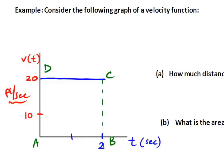All right, so let's suppose we have a graph of a velocity function here. So again, it looks like the velocity here is just constant. It's a constant 20 feet per second over the first two seconds of motion.